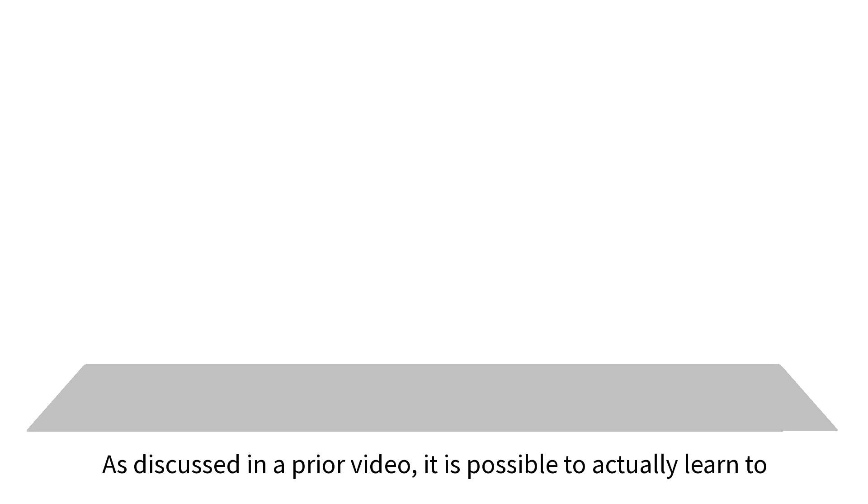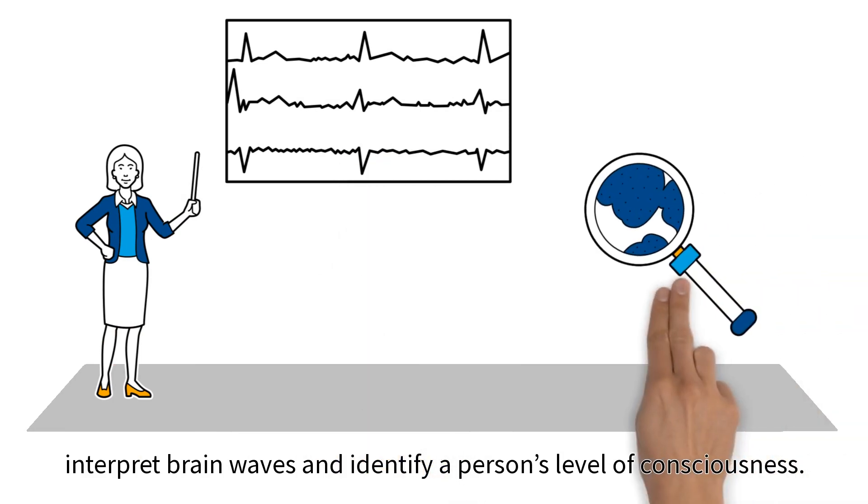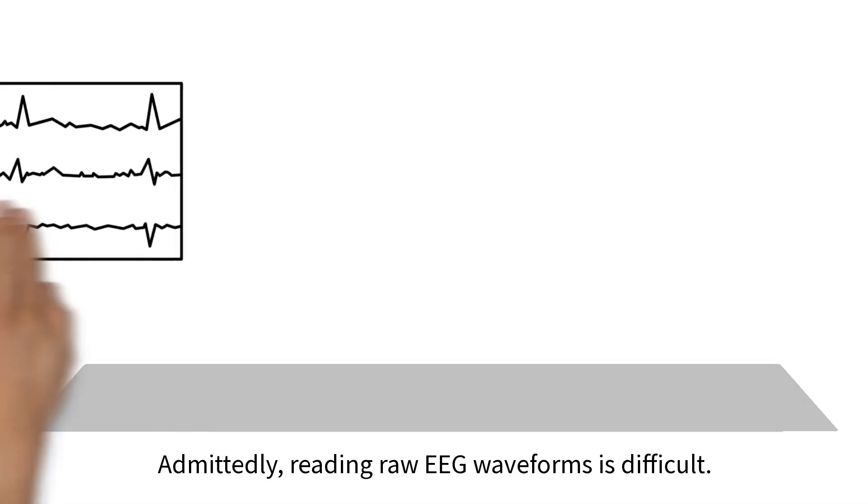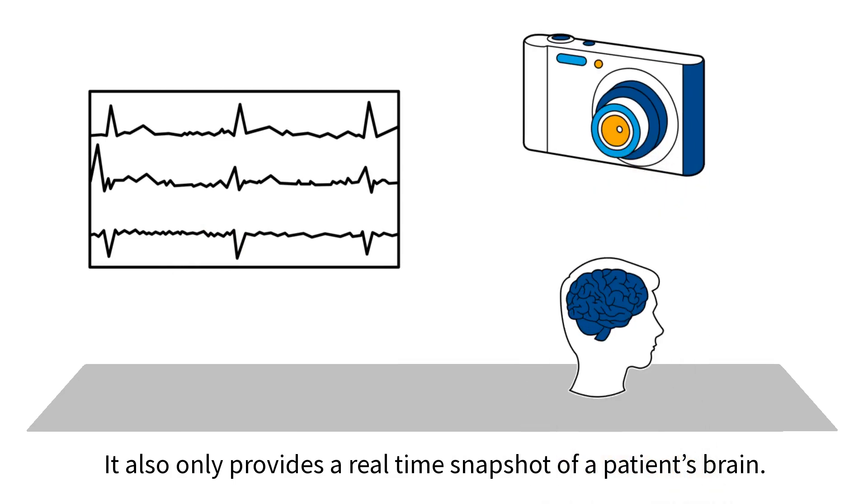As discussed in a prior video, it is possible to actually learn to interpret brain waves and identify a person's level of consciousness. Admittedly, reading raw EEG waveforms is difficult. It also only provides a real-time snapshot of a patient's brain.